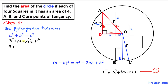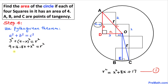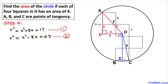Let's simplify. Three squared is nine. Expanding (4 minus x) squared using the a minus b squared formula gives 16 minus 8x plus x squared. So we get: r squared equals x squared minus 8x plus 25. I'll call this Equation 2.